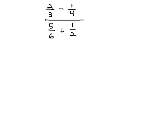In this video, we're going to take a look at two different ways we can simplify the complex fraction: 2 thirds minus 1 fourth, over 5 sixths plus 1 half.